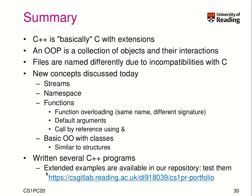That was a quick introduction to C++. To wrap up today's lecture: C++ is basically C with extensions, and an object-oriented program is a collection of objects and their interactions. Files are named differently due to some incompatibilities with C. We looked at new concepts: streams, namespaces, functions — in particular function overloading, which means you can have the same name with a slightly different parameter signature — default arguments, call by reference using the ampersand, and a very basic object-oriented program with classes. More C++ programs are available in our portfolio. I wish you a great week and will see you next week.